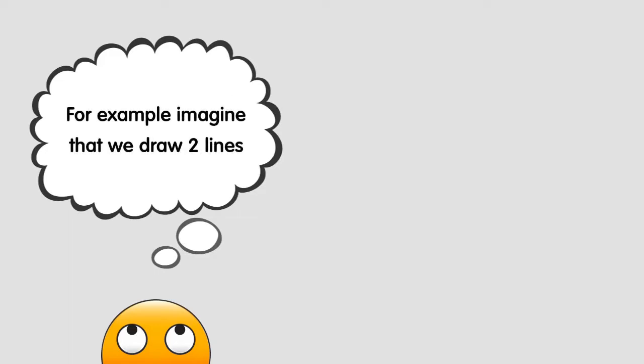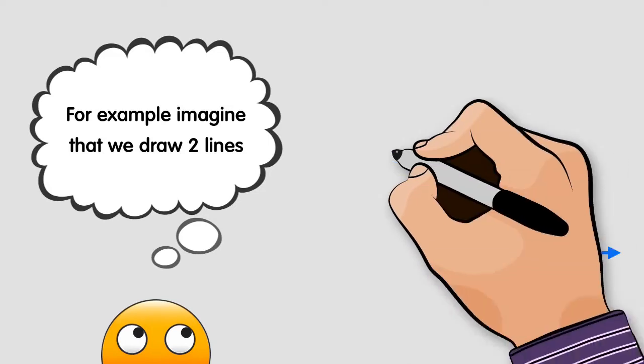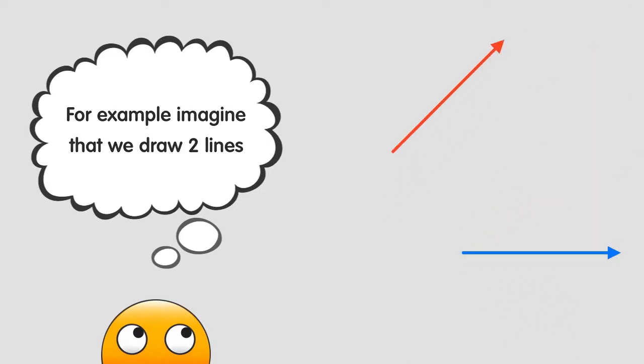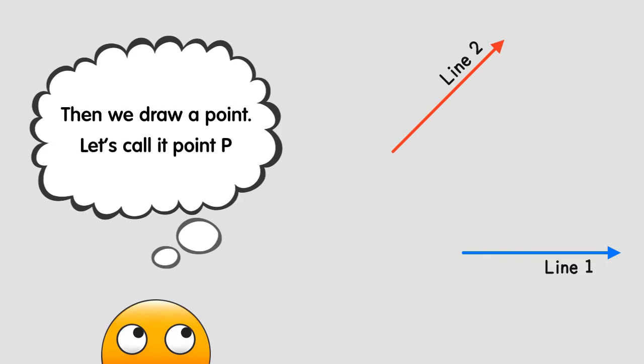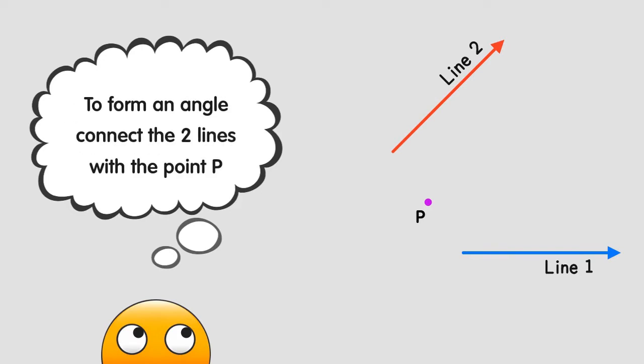For example, imagine that we draw two lines. Let's call them line 1 and line 2. And then we draw a point. Let's call it point P. To form an angle with these two lines, what we have to do is connect the two lines with the point P. In this way.